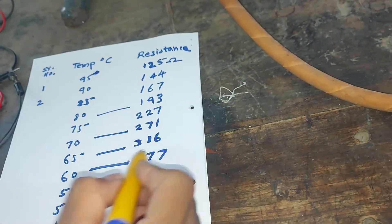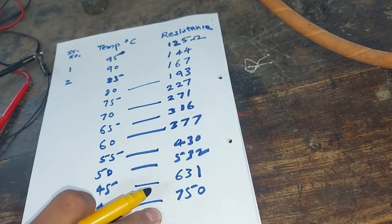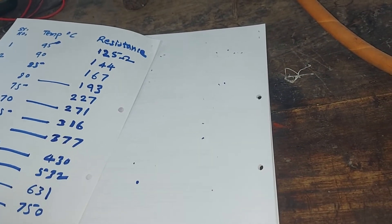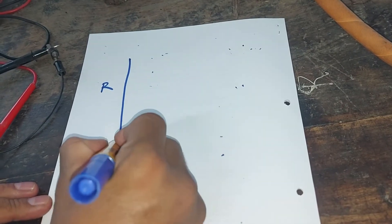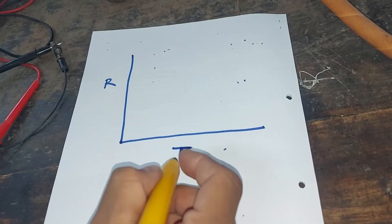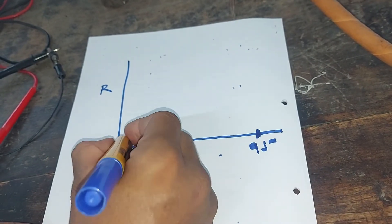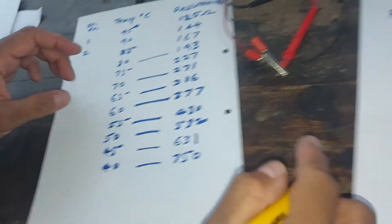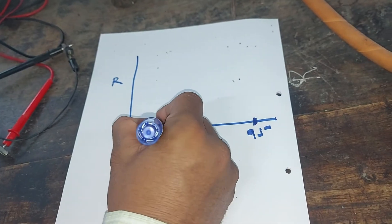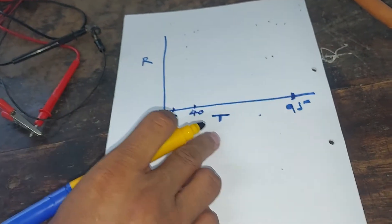You can see the trend: as the temperature goes on decreasing, the resistance values are increasing. Now what we have to do is plot a graph. You have to plot a graph of resistance value R on the y-axis and temperature on the x-axis. The maximum temperature we went up to is 95 degrees centigrade, and the minimum temperature will be around the room temperature, say 30 degrees centigrade. We have readings up to 40 degrees centigrade, so our graph will be in that range.